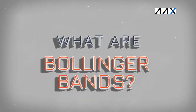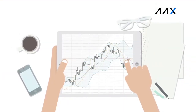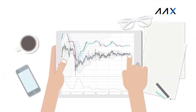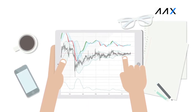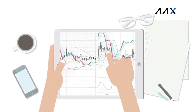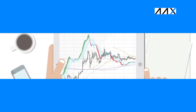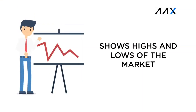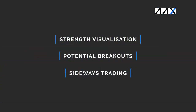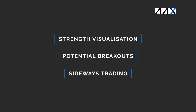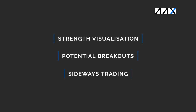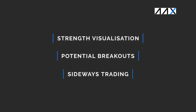What are Bollinger Bands? Bollinger Bands, otherwise known as BBs, are a popular technical analysis tool used by traders all around the world. Bollinger Bands can do various things and are used to show the highs and lows of a market. They allow traders to visualise trend strength, potential breakouts, and also identify periods of sideways trading.